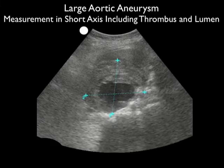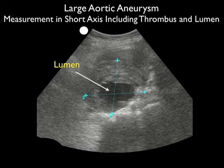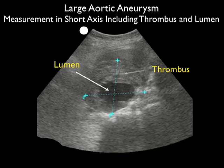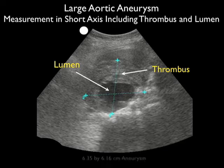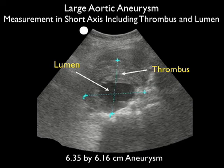Next we measure this triple-A, placing the calipers from anterior, posterior, and laterally, adding the lumen and the thrombus to our measurements. We come up with a measurement of 6.3 by 6.16 centimeters, again meeting the definition of a triple-A.